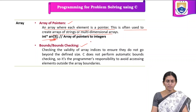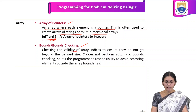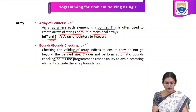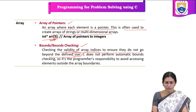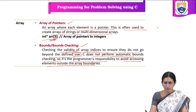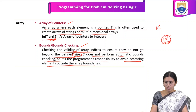Next is bounds or bound checking. This term comes into picture regarding the size of the array. Bound checking refers to checking the validity of array indices to ensure they do not go beyond the defined size. C does not have provision for automatic bound checking — it is the programmer's responsibility to avoid accessing elements outside the array boundaries. For example, if we declare the size as 5 and the programmer wants to access the seventh element, it is the programmer's responsibility to avoid such errors.